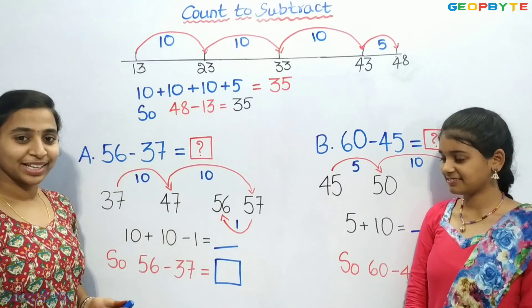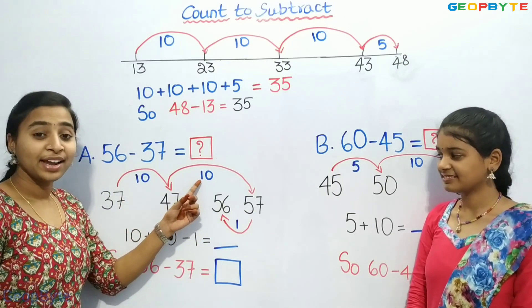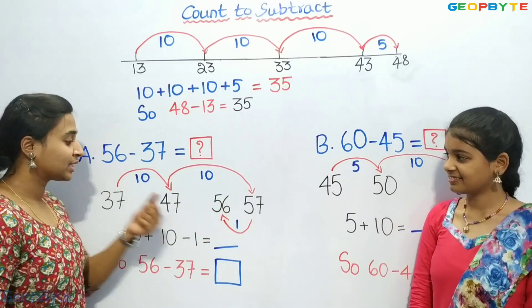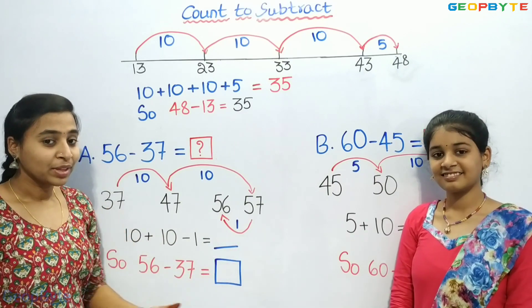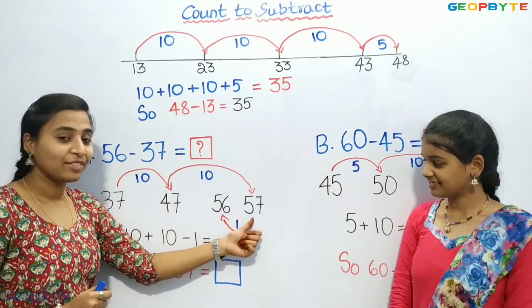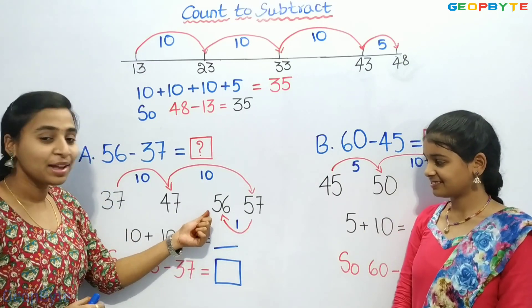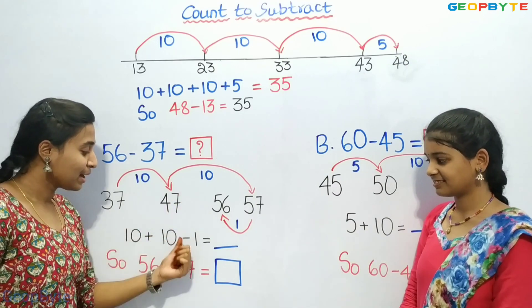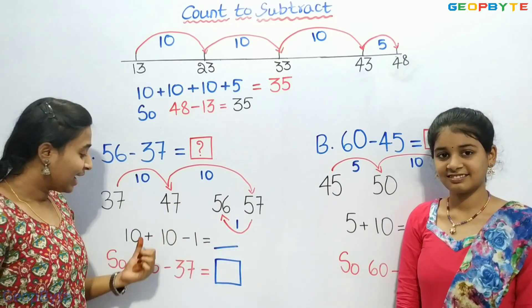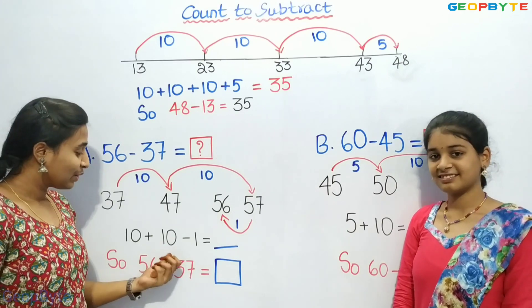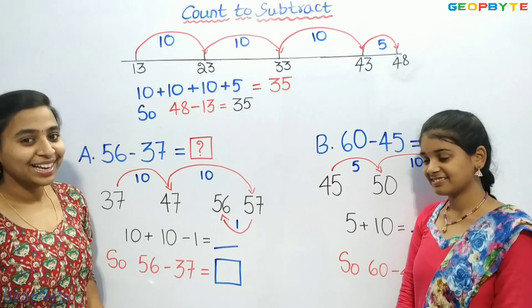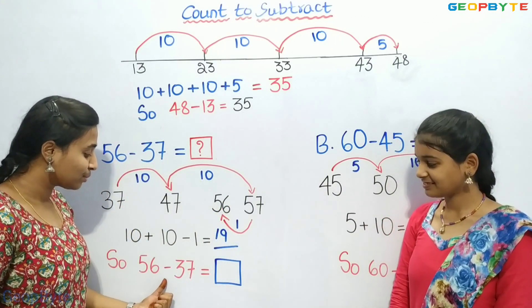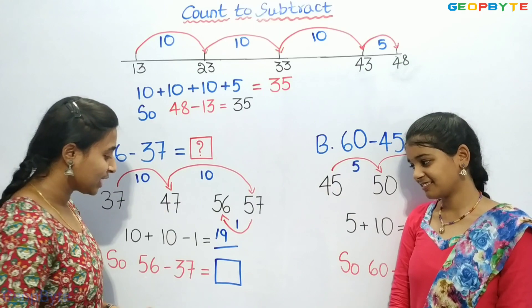So, 10 plus 10 minus 1. Because we have 56, not 57. To count in jumps of 10 we took 57, and then subtracted 1. So, 10 plus 10 is 20. 20 minus 1 is 19. So children, 56 minus 37 is equal to 19.